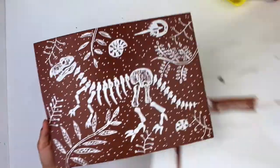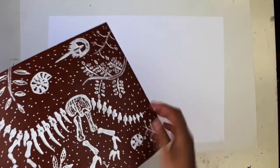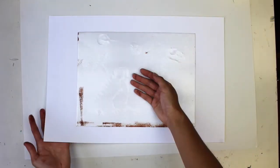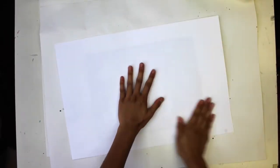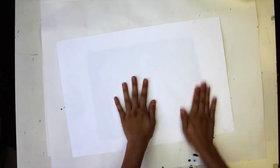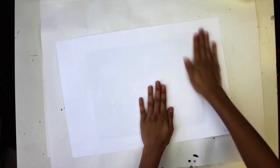When the styrofoam is inked, get your paper and carefully place the styrofoam face down in the center. Hold the styrofoam and flip the paper. Thoroughly and firmly rub all over the paper to make sure the ink transfers cleanly. You can check the print to see if you need to add more ink or rub more.